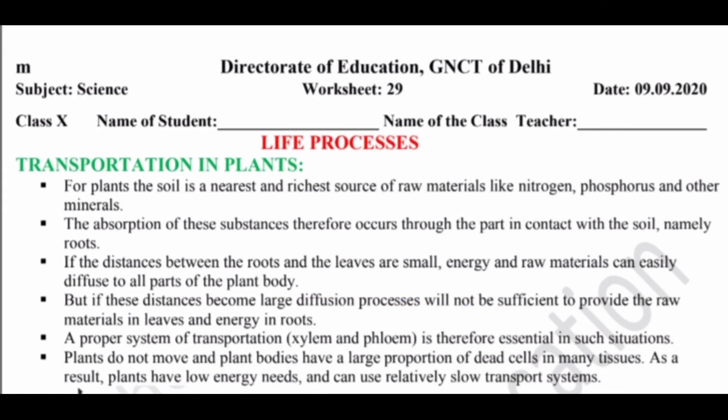For plants, the soil is the nearest and richest source of raw material like nitrogen, phosphorus and other minerals. The absorption of these substances therefore occurs through the part in contact with the soil, namely roots. If the distance between roots and the leaves is small, energy and raw material can easily diffuse to all parts of the plants. But if the distance becomes large, diffusion process will not be sufficient to provide the raw material in leaves and energy in roots.